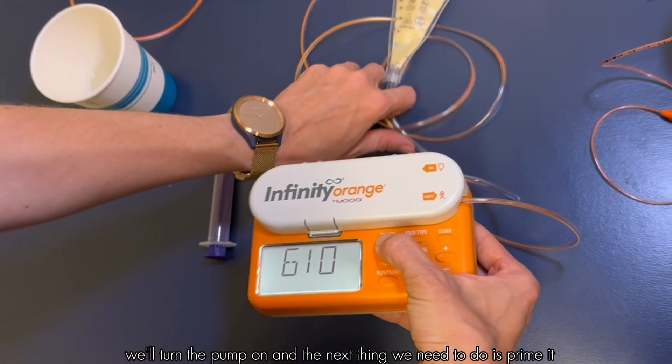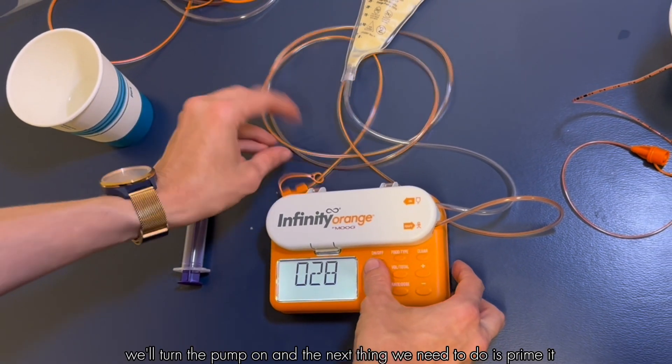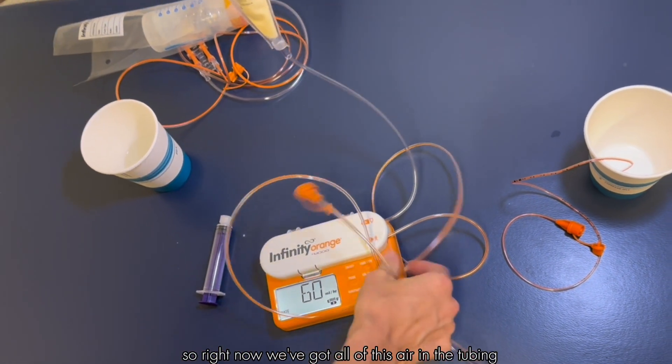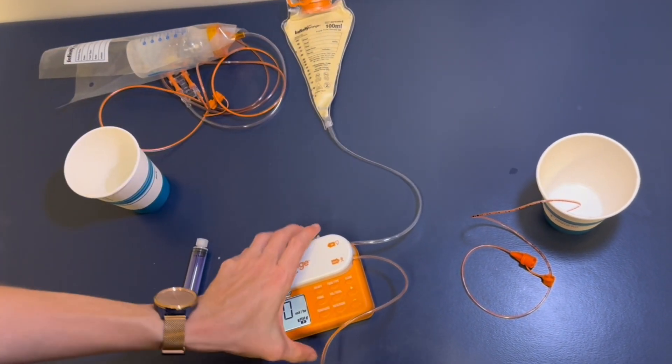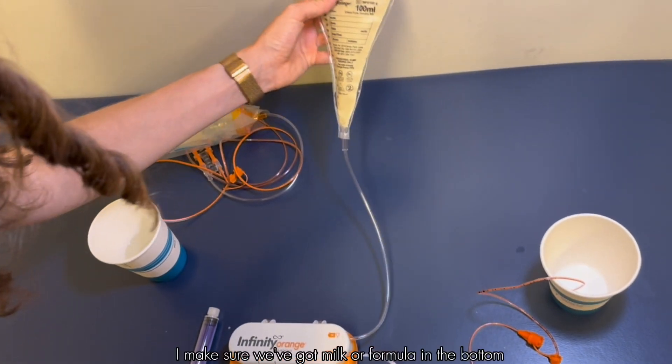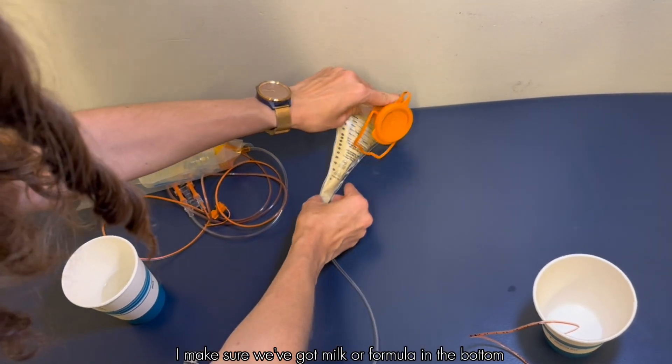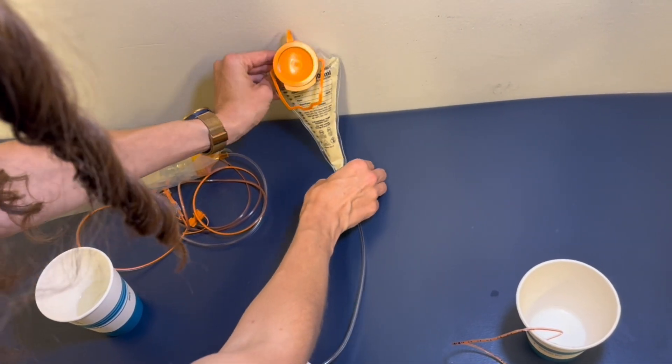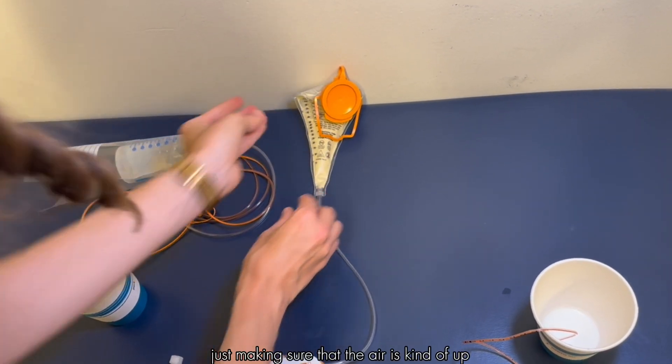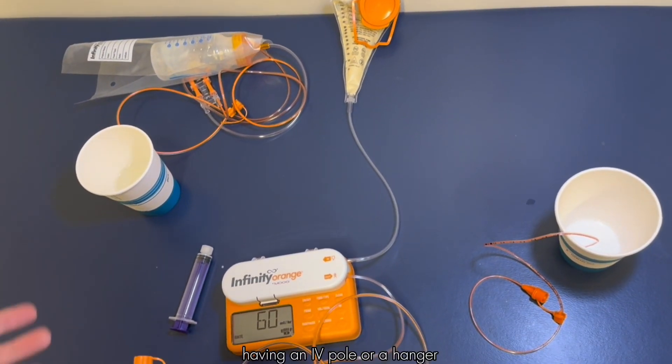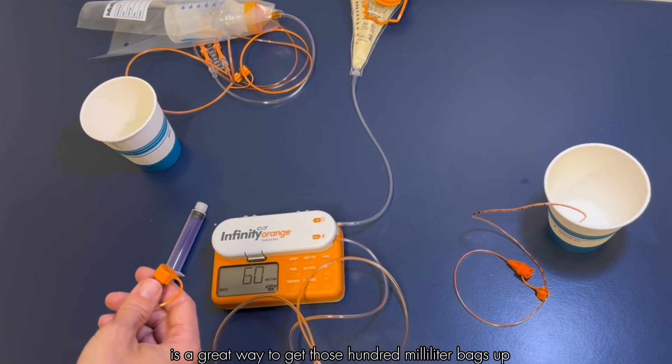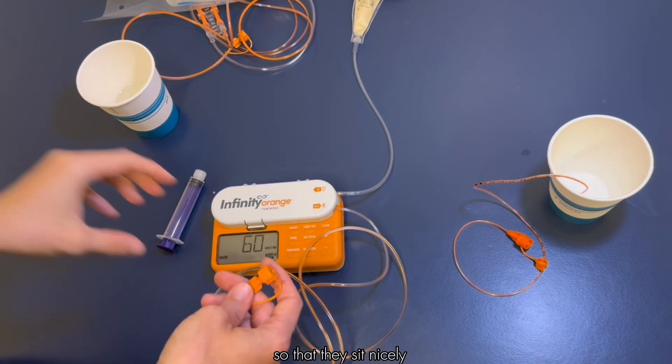We'll turn the pump on and the next thing we need to do is prime it. Right now we've got all of this air in the tubing and we don't want that air going into baby. I'm going to set up my bag to make sure we've got milk or formula in the bottom. Just making sure that the air is kind of up. Having an IV pole or a hanger or a command hook is a great way to get those hundred milliliter bags up so that they sit nicely.